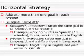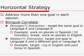Horizontal strategy would say: address more than one goal in each session. So you might have a stronger interaction perspective in week one. The stronger would say: target the same goal in language A and language B. So work on plurals in Spanish for 10 minutes, do a break, and then work on plurals in English.